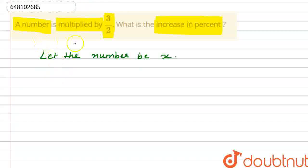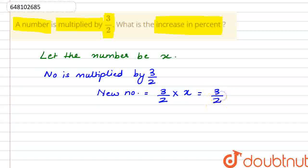The number is multiplied by 3/2. That means our new number will be 3/2 multiplied by x, which equals 3x/2.